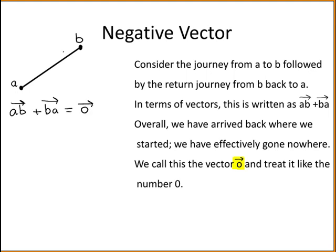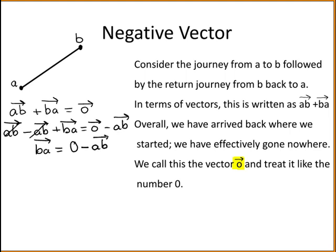As your overall displacement from A to B and then B back to A is zero, subtracting AB from both sides, well these two cancel. So you have that the vector BA is equal to—now we said we're going to treat the zero vector as the number zero—minus AB. So then you have that the vector BA is equal to minus the vector AB.